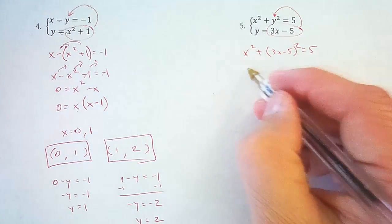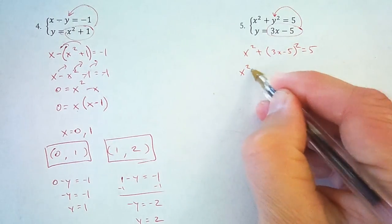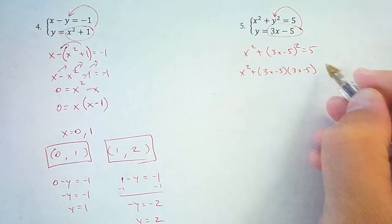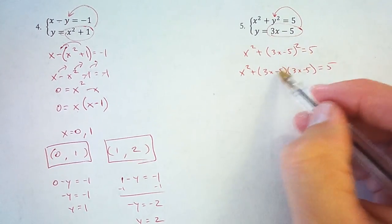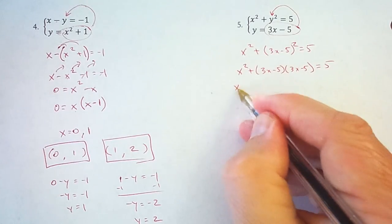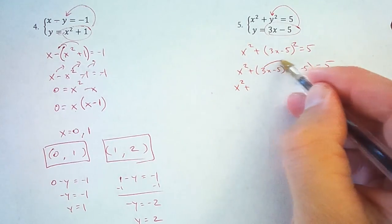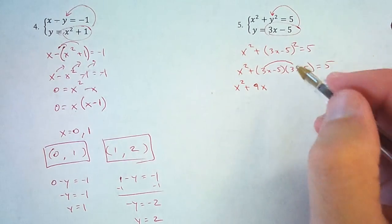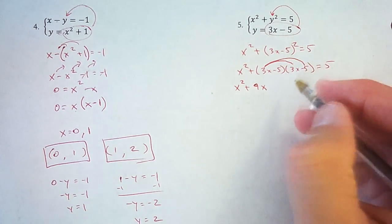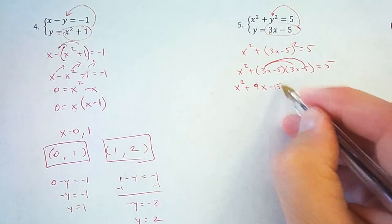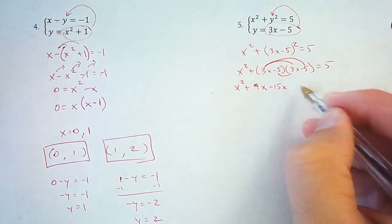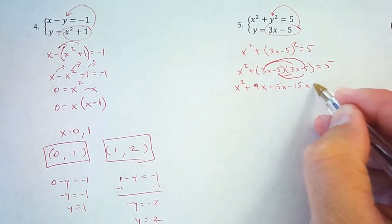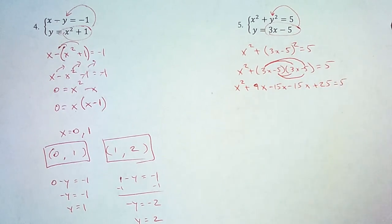So now (3x minus 5) squared, that means x squared plus (3x minus 5) times itself. Anytime you see squared, that means multiply something by itself. So 3x times 3x is 9x squared. 3x times negative 5 is negative 15x. Negative 5 times 3x is another negative 15x. And negative 5 times negative 5 is plus 25 equals 5.